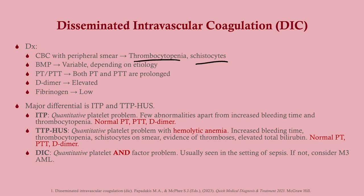Diagnosis of DIC looks like both a platelet deficiency and a factor deficiency — all factors are used up. You'll see thrombocytopenia and schistocytes on smear, because the clots shear the red blood cells. BMP is variable depending on etiology. Both PT and PTT will be prolonged. D-dimer will be elevated and fibrinogen will be low. The major differentials are ITP and TTP/HUS. ITP is a quantitative platelet problem with no factor issues — PT and PTT are normal. TTP/HUS also has thrombocytopenia with hemolytic anemia and schistocytes but normal PT/PTT. DIC is unique in being both a platelet and a factor problem.